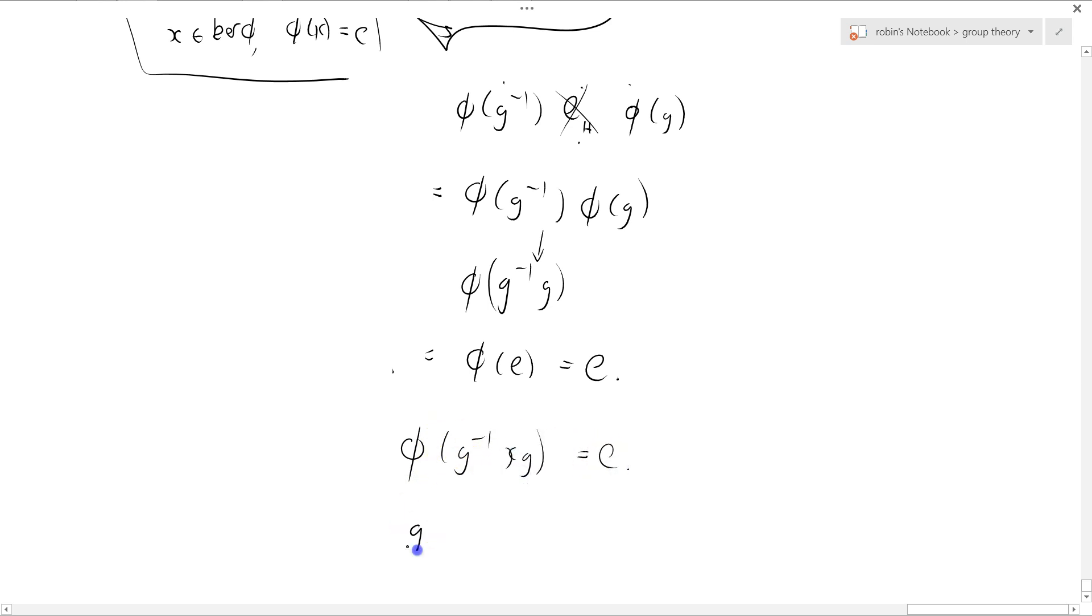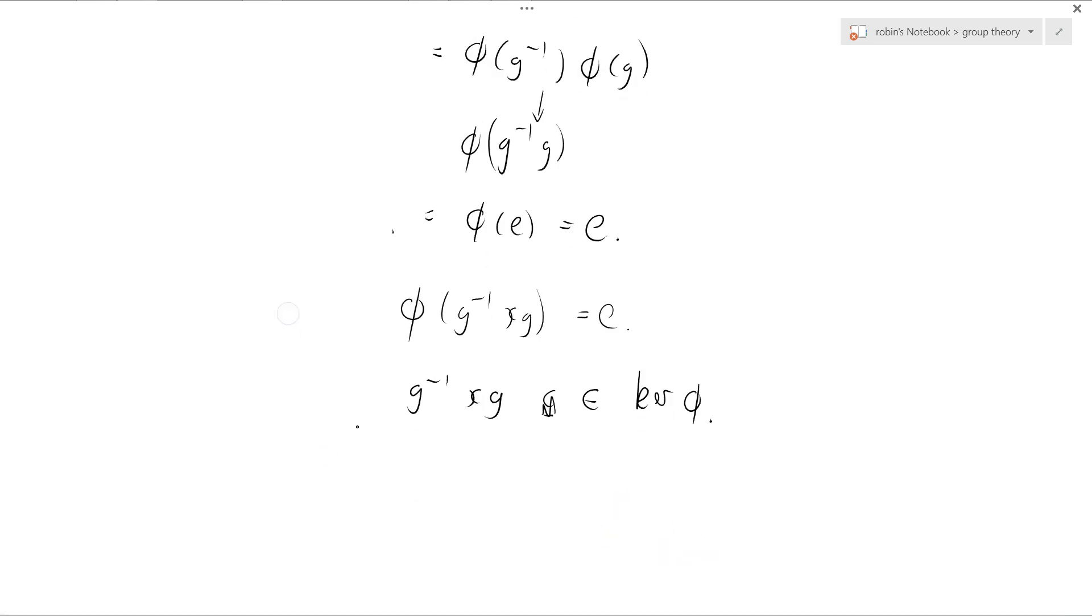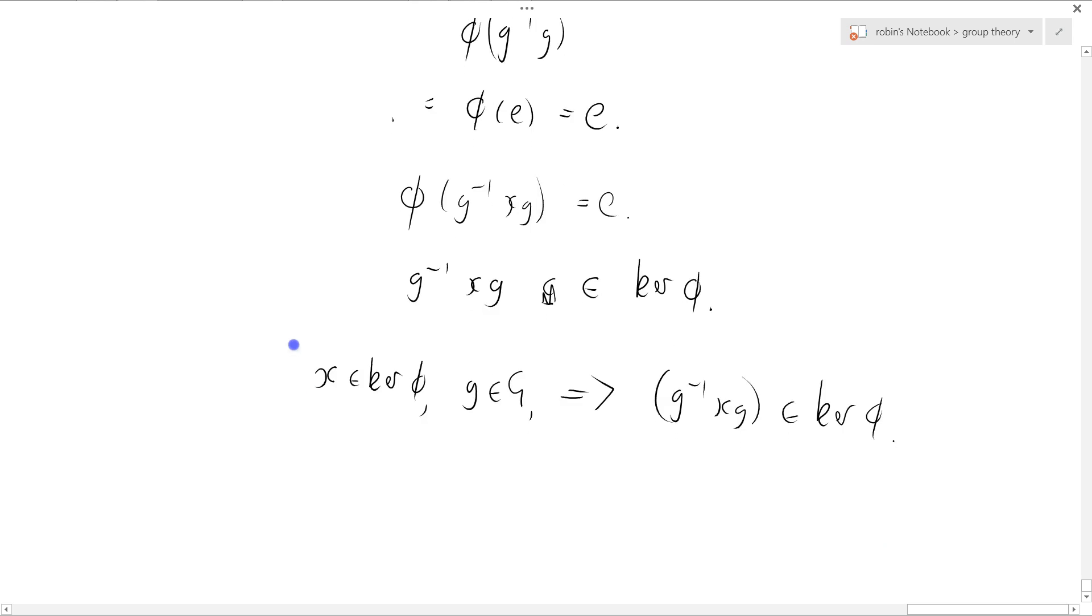In other words, that G inverse XG is an element of ker phi. So, X is a member of ker phi, G is any member of the group, together imply that G inverse XG is also ker phi, which is the definition of a normal subgroup.